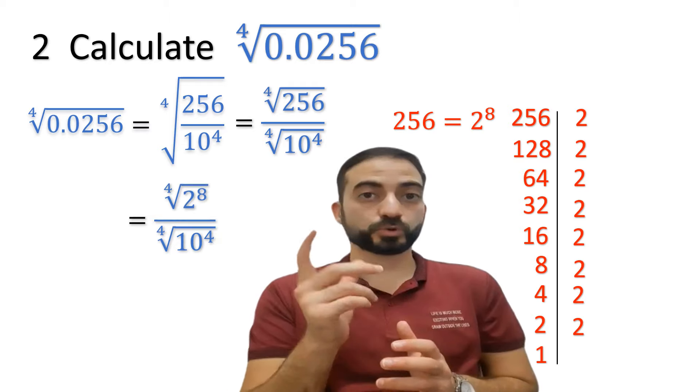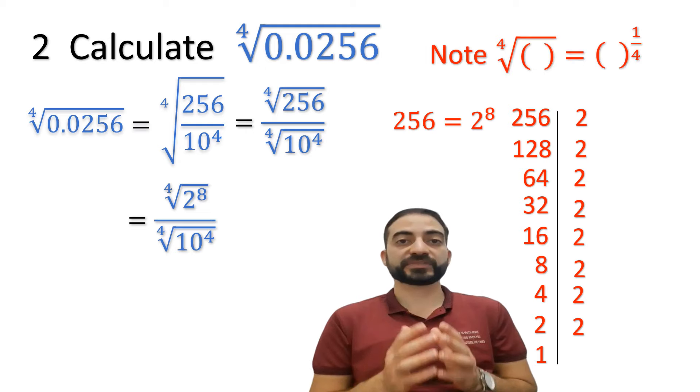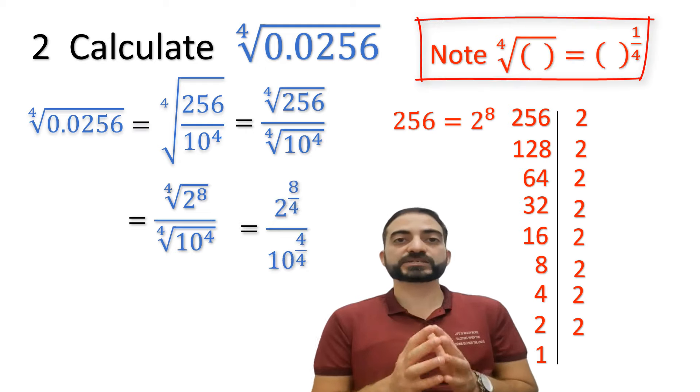256 equals 2 power 8. Now, we can eliminate the fourth root and get the final answer.